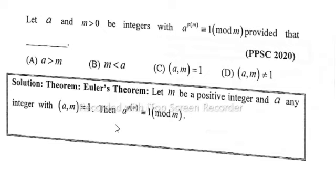alpha power phi of m is equal to 1 mod m. So option C is correct, that is (alpha, m) equals 1.